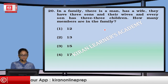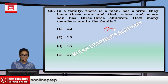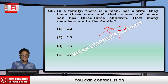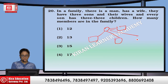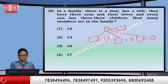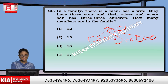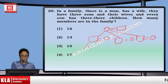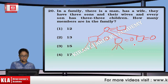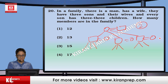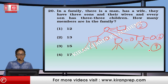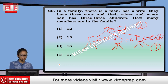Next question: in a family there is a man and a wife. They have three sons and their wives. Every son has three children. How many members are there in the family? Two at this level, six at this level, and nine at this level. The total becomes 17. That means option number four.